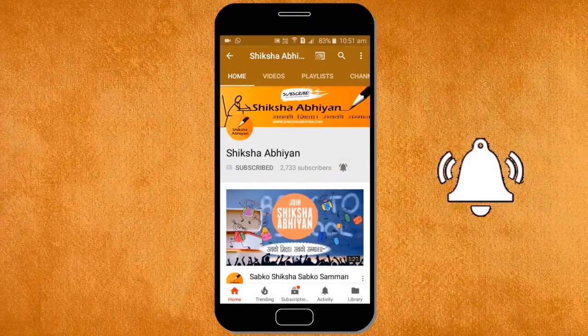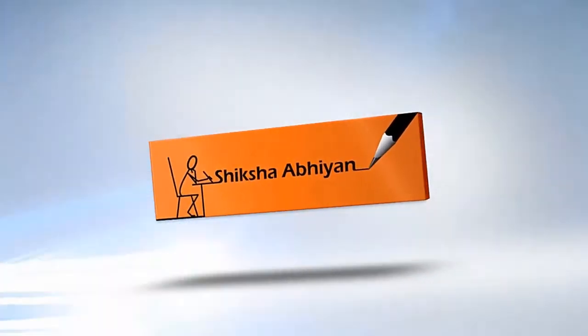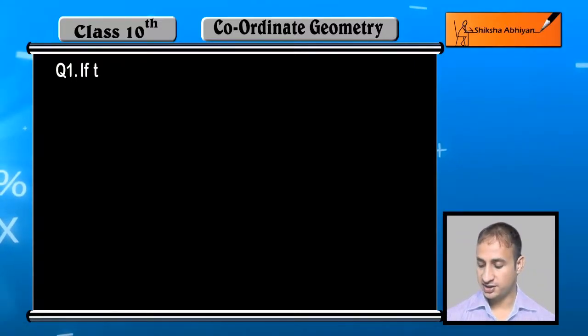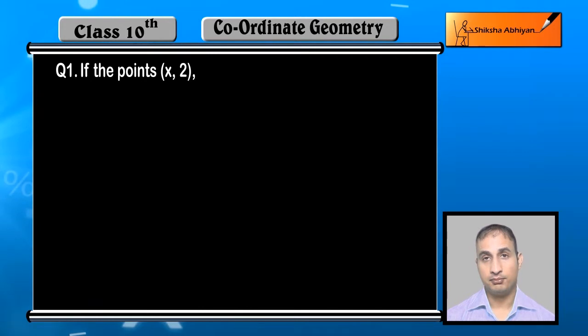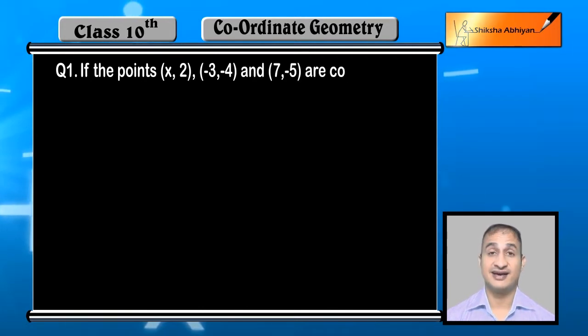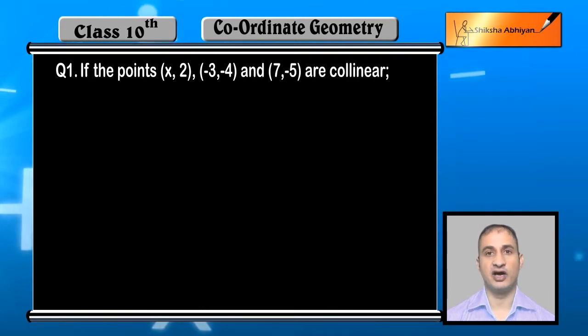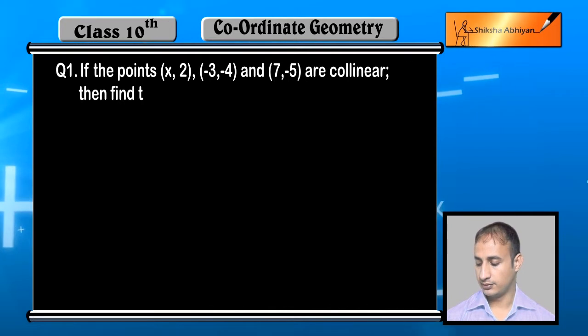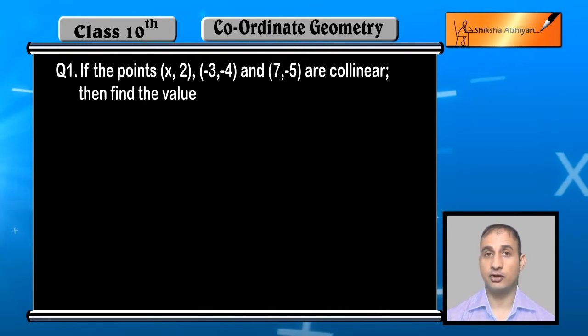Now students, we will start the assignment segment of this chapter: coordinate geometry. See the first question: if the points x comma 2, minus 3 comma minus 4, and 7 comma minus 5 are collinear, then find the value of x.